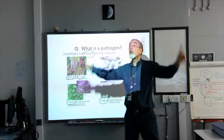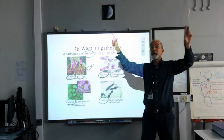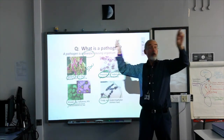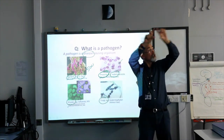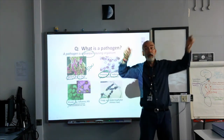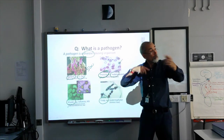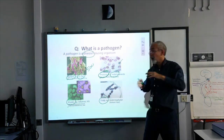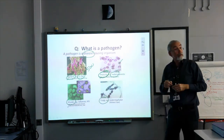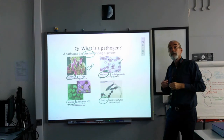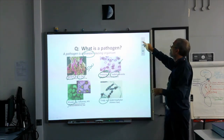Once you've defined what a pathogen is, given its definition, and looked at what infection and disease are, I'd like you to give a quick example of what a pathogen might look like for your report. What does it take to be a successful pathogen?